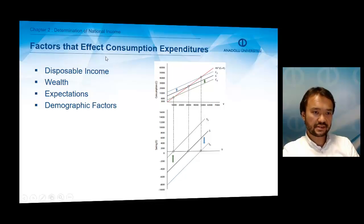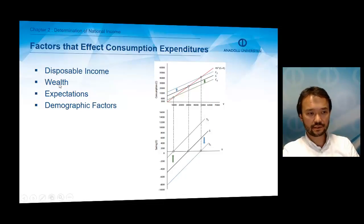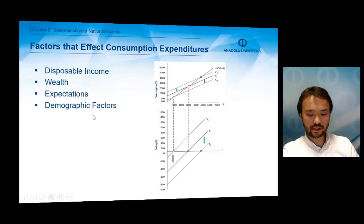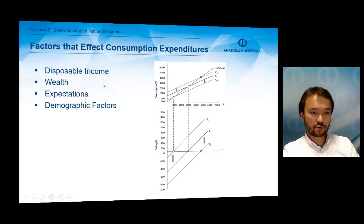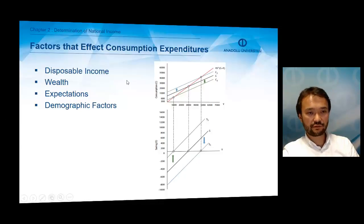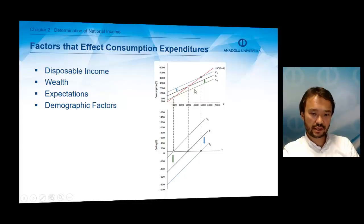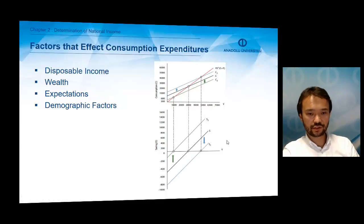Which factors affect consumption expenditures? They are: disposable income, wealth, expectations about the future of the economy, and demographic factors. When there is a positive effect on consumption, the consumption curve shifts upward. When there is a negative effect on consumption expenditures, the consumption line shifts downward, and the savings function shifts upward or downward accordingly.